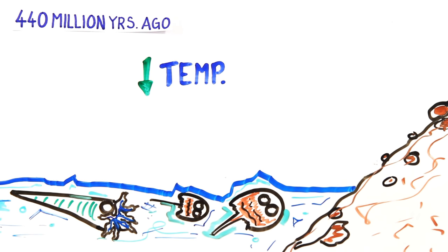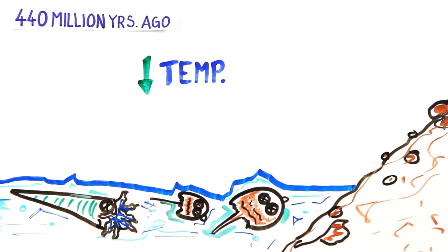This caused ocean levels to drop and shallow seas to drain, and after several cycles of growing and shrinking glaciers, about 86% of species were lost forever.